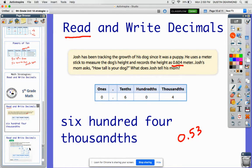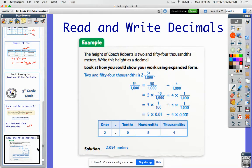Now, to write decimals, again, if you can read it, then you're going to do a little bit better about writing it because it makes sense to you about what you're looking for. So let's look at this example, and this one's focusing on how to write a decimal. It says the height of Coach Roberts is two and fifty-four thousandths, and they want us to write it as a decimal.